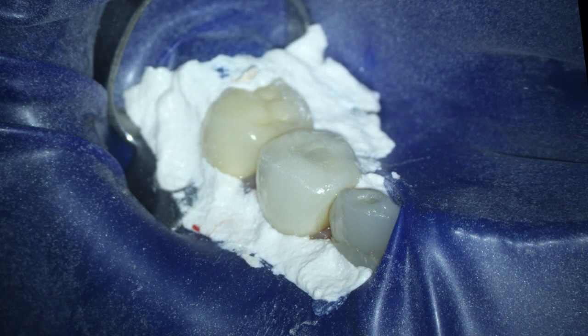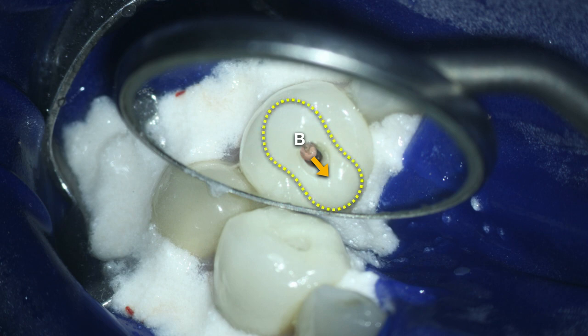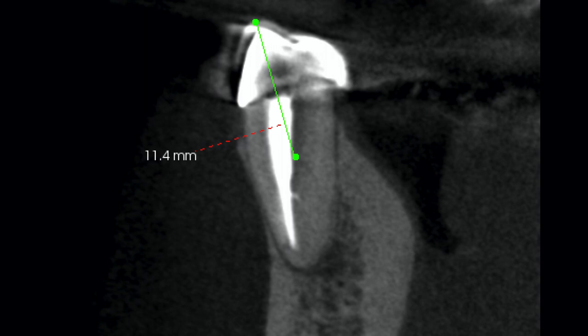I chose to use a split dam technique with rubber dam blockout material. The access for this case was performed through the original access just by removing the composite. Immediately after removing that restoration, you can visualize the obturation material in the buccal canal. We know we need to move in the lingual direction. We know the root morphology is very thin and narrow in the mesial-distal direction, that we have a mesial root depression, and that the lingual canal branches off the buccal canal at a very acute angle approximately 11.5 millimeters from the buccal cusp tip. With all this known, we've got to plan a strategy to find and treat that lingual canal.